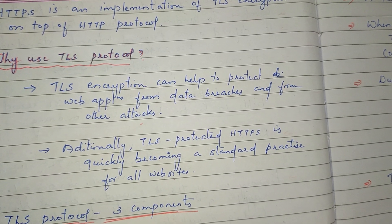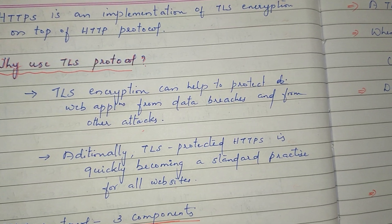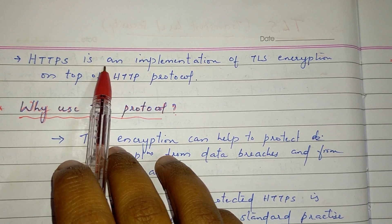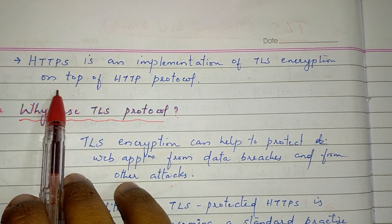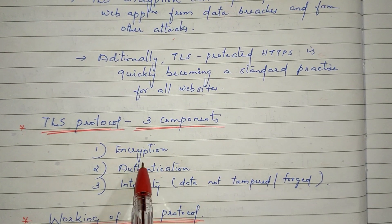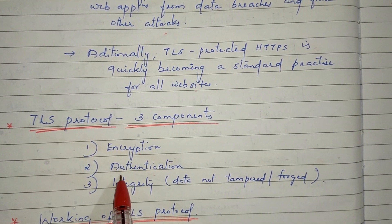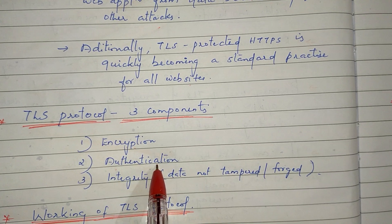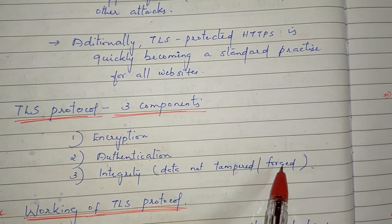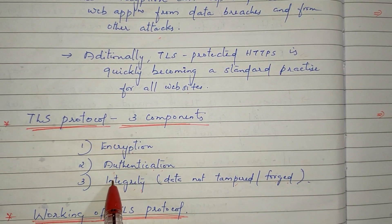HTTPS is quickly becoming a standard practice for all websites. HTTPS is an implementation of TLS encryption on top of HTTP. In the TLS protocol, the three main components are: confidentiality to prevent data leaks, authentication to verify the server, and data integrity to ensure data has not been tampered with.